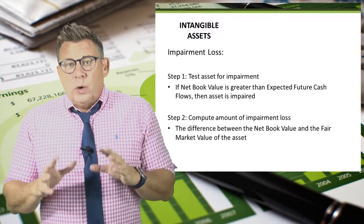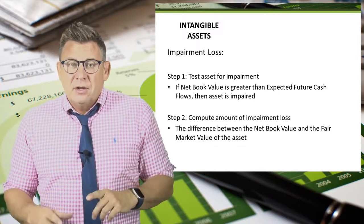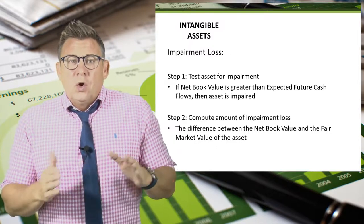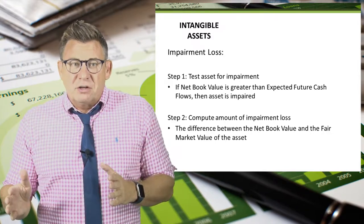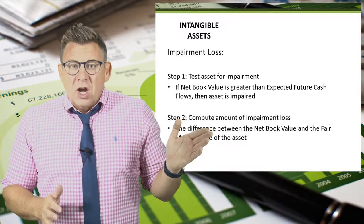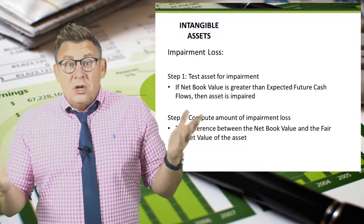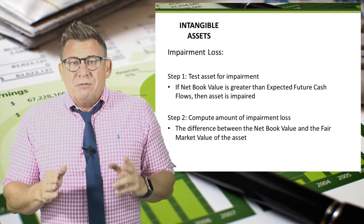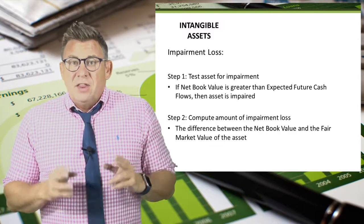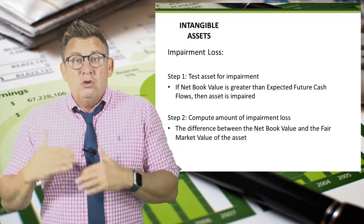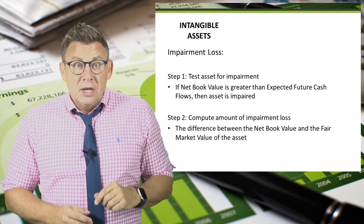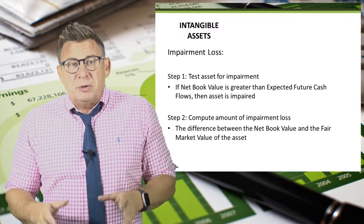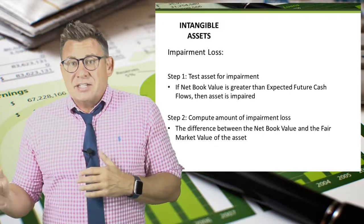There is a two-step process when determining if an asset has been impaired. Step one is the test for impairment — it compares the asset book value with the value of the expected future cash flows. If the cash flows are greater than the book value, then no impairment has occurred and you're done. If not, you need to move on to step two, where we determine the amount of impairment. The amount is the difference between the asset's net book value and the asset's fair market value.